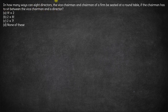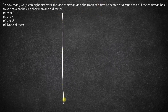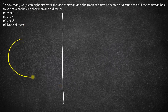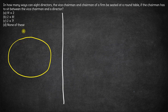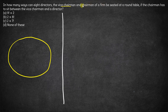There are two ways of solving this question. What we have is 10 people to be seated around a circle such that the chairman is between the vice chairman and a director.